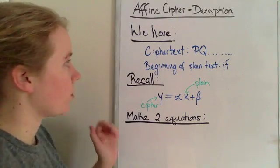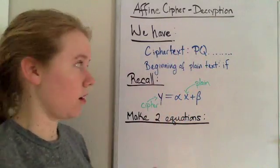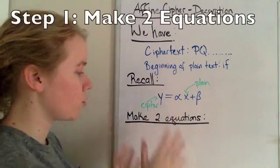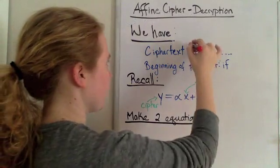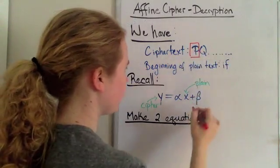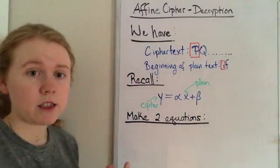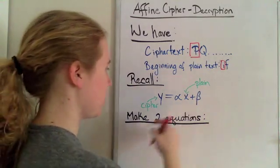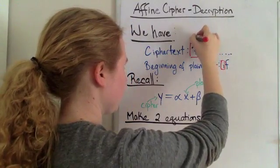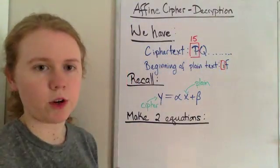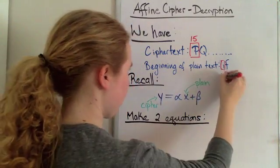So what we're going to do is we're going to take the known and the unknown text, and we're going to make two equations out of it. I'm going to start with taking the first letter of the ciphertext and the first letter of the plaintext, and I'm going to put it in here. So P is the fifteenth letter, assuming we're starting with A is zero, and I is the eighth letter.